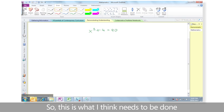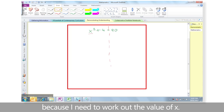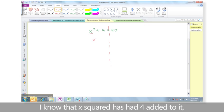So this is what I think needs to be done in this mathematical challenge. I need to try to get x on its own because I need to work out the value of x. I know that x squared has had 4 added to it, so I'm going to take that 4 away.